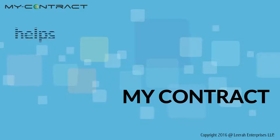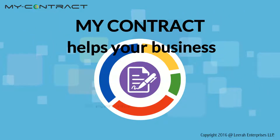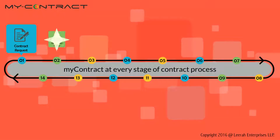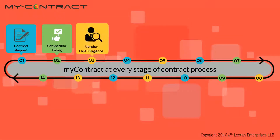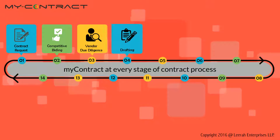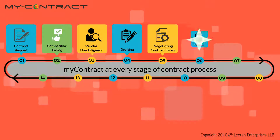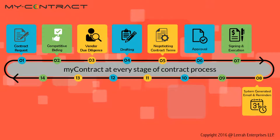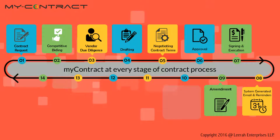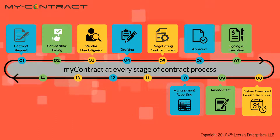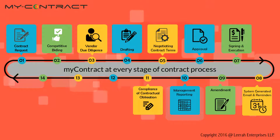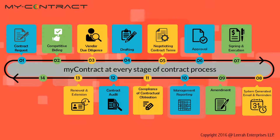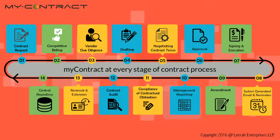MyContract helps your business by managing contracts at every phase of the contract lifecycle — be it contract request, competitive bidding, vendor due diligence, drafting, negotiating contract terms, approval, signing and execution, system-generated emails and reminders, amendment, management reporting, compliance of contractual obligations, contract audit, renewal and extension, and central repository.